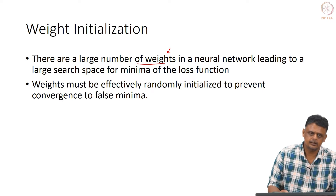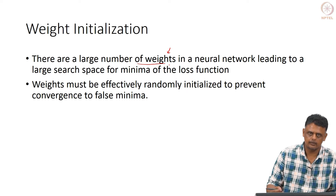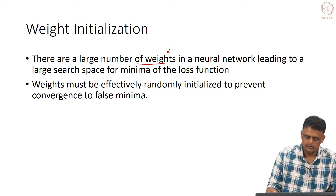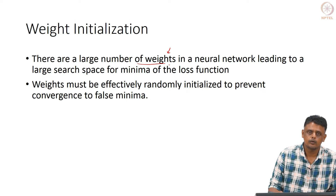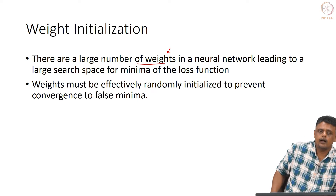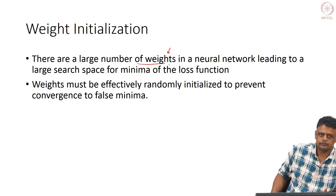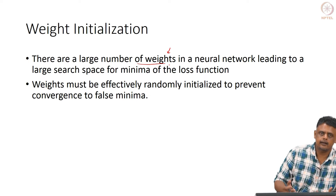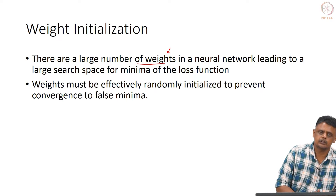This leads to a large search space. You must minimize the loss function, which is a function of your weights — a multi-dimensional problem. You want the weights initialized randomly to prevent convergence to false minima and to explore the entire space. Just as with hyperparameter ranges, you need to figure out the range of initial weights so the entire loss function space is covered to some extent.